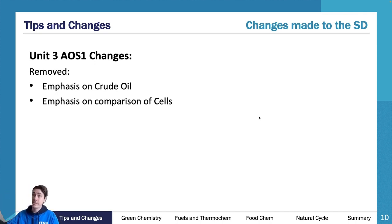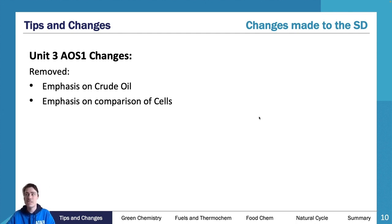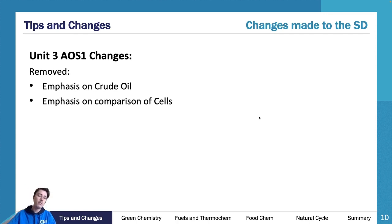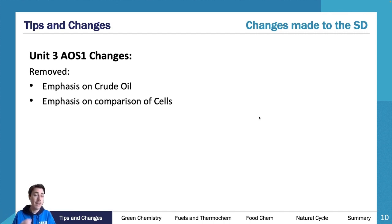What you need to know are the changes. For unit three area of study one, what's being removed is the emphasis on crude oil. In older exams and study guides there's a massive emphasis on crude oil — that's the raw component of petrodiesel. You still need to know a little bit about it, but it used to be a really big topic and now it's a smaller subtopic.